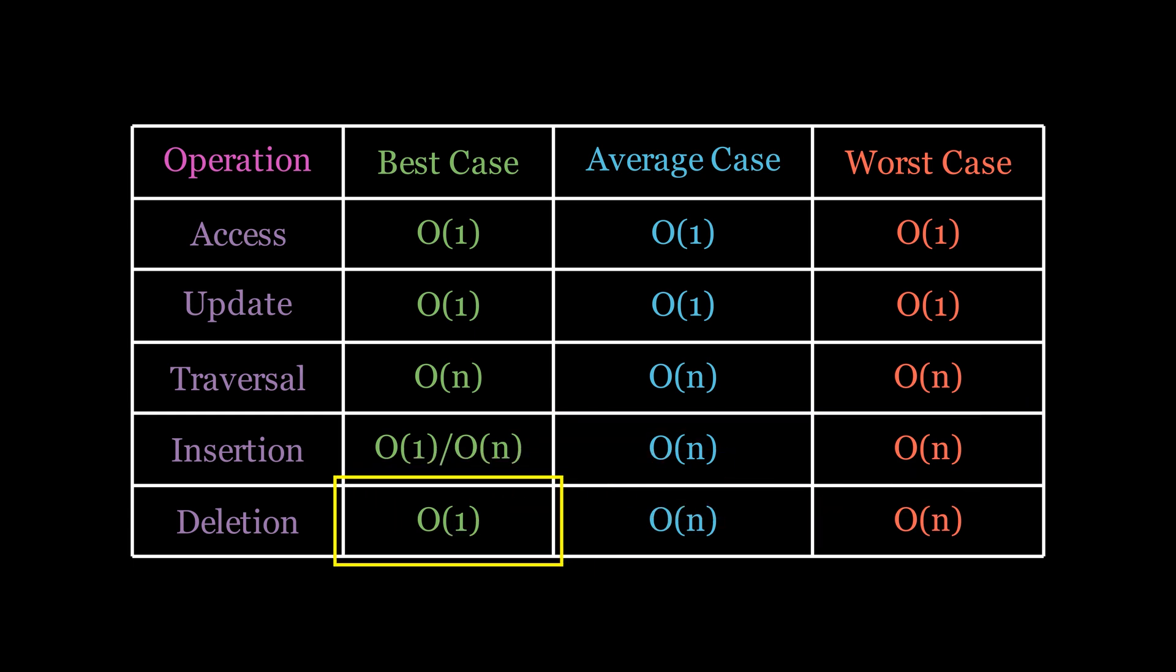Now, when it comes to deleting elements, the best case happens when the element to be deleted is the last one. In this scenario, the algorithm simply removes the element without shifting any others, resulting in constant time. However, in the average and worst cases, deletion will take linear time due to the need to shift elements.